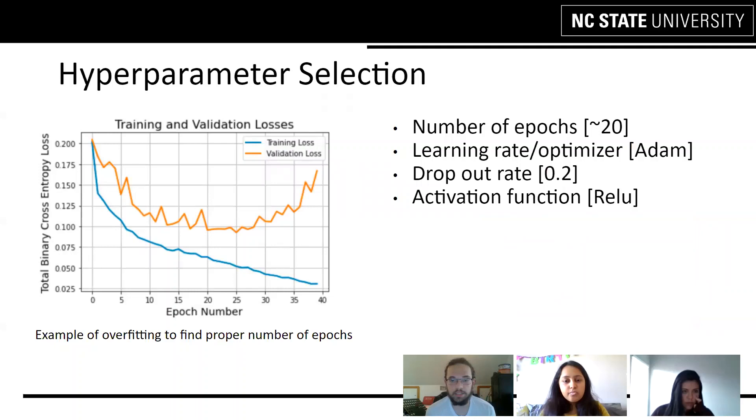For our hyperparameter selection, several of the hyperparameters that we wanted to think about were the number of epochs we would use during training, the learning rate or the optimizer that we would use, the dropout rate used in our dropout layers, and the activation functions that we were going to use.